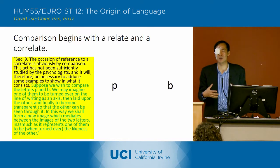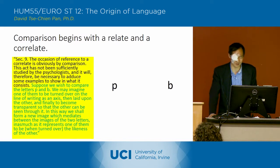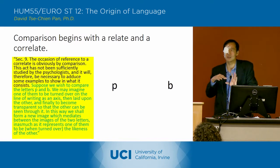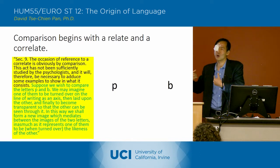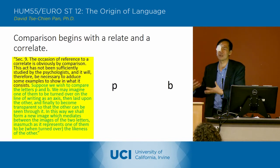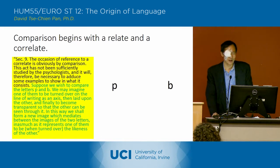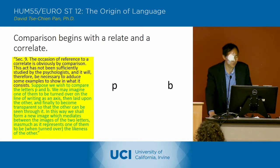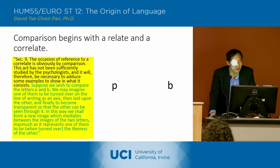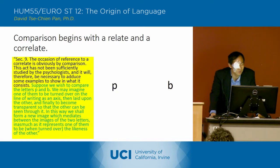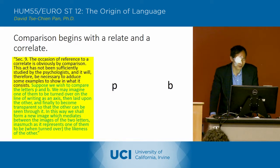He says this is actually a very complicated relationship, and he's going to explain what it implies — what's already contained in this relationship that we haven't seen. His first example is the letters P and B. He says: 'Suppose we wish to compare the letters P and B. We may imagine one of them to be turned over on the line of writing as an axis, then laid upon the other, and finally to become transparent so that the other can be seen through it. In this way, we shall form a new image which mediates between the images of the two letters.'